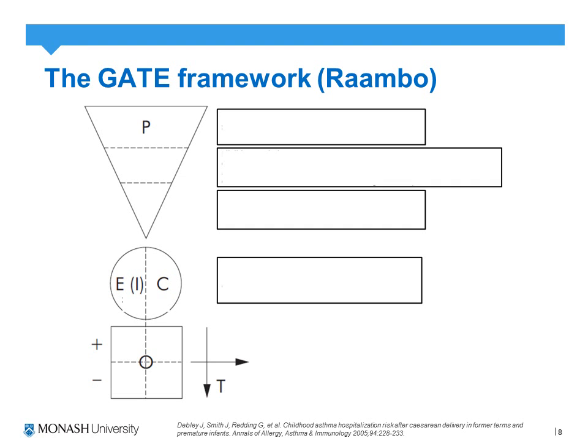We can also use the GATE framework with the RAMBO technique, which can be applied across RCT, cohort, or case-control study designs. In this scenario, we use a study by Debly in which the authors investigated childhood asthma hospitalisation after caesarean delivery. Running through it using the GATE framework, the first element relates to representation from the RAMBO.